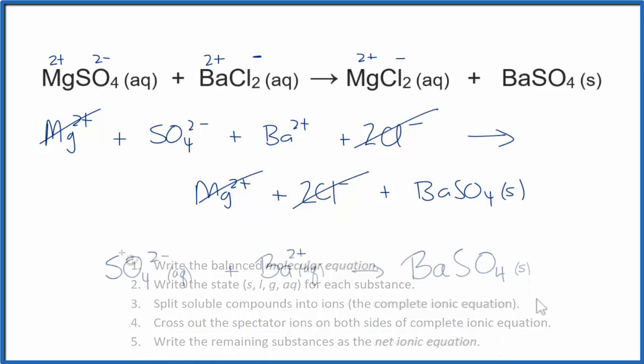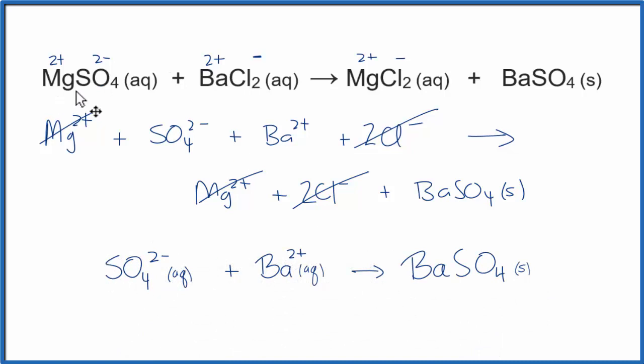That'll look like this. And this is the net ionic equation for magnesium sulfate plus barium chloride. This is Dr. B. And thanks for watching.